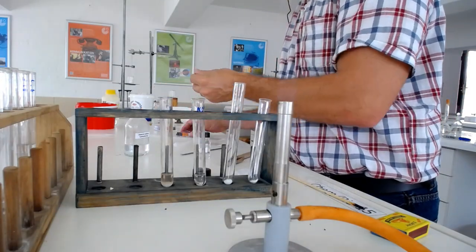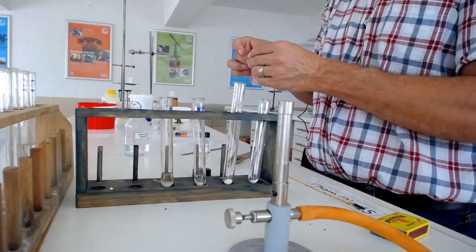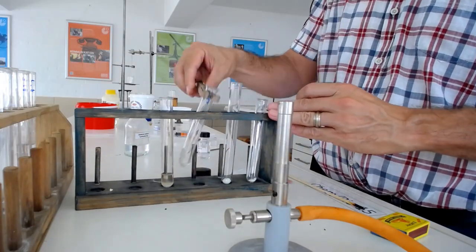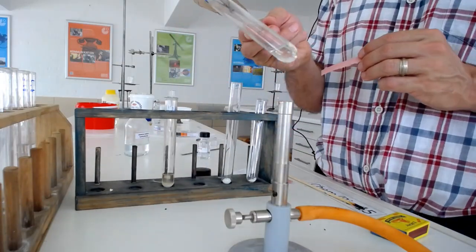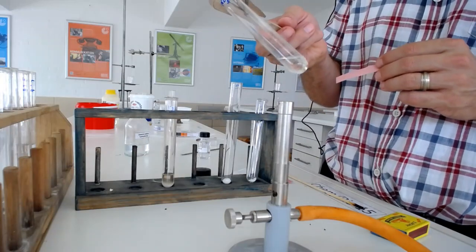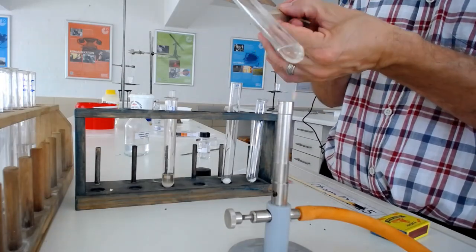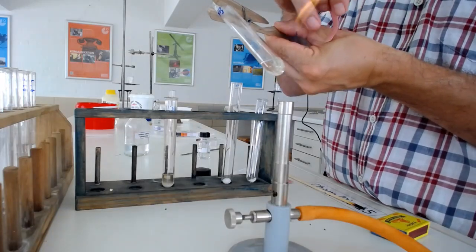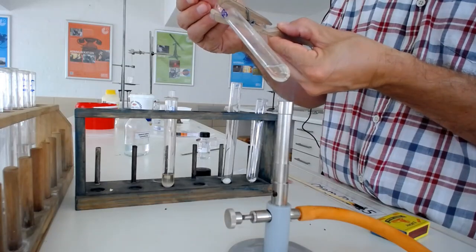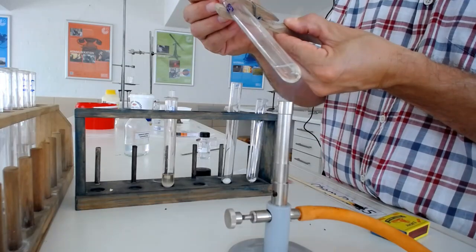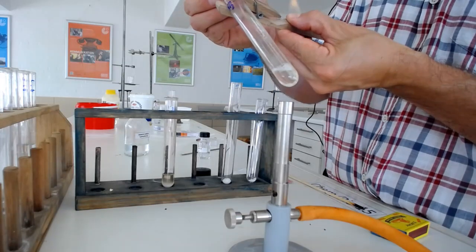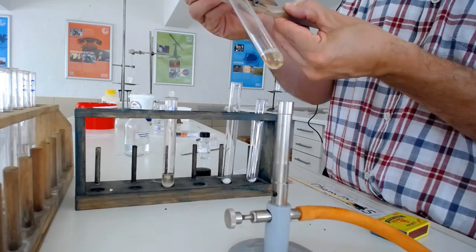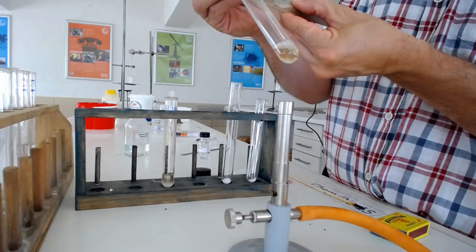So again, red litmus paper turning blue because ammonia is a basic gas. This is really important that you know that. And remember, always when heating, it's at an angle. You don't want to aim it at someone. Look at the moisture there, so there's some water vapor coming off. Let's heat it some more.